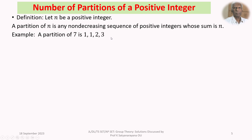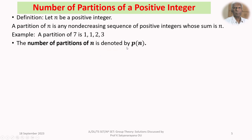Now the question is, how many partitions are there for a given N? The number of partitions is denoted by P(N). So P(7) means how many partitions are there for 7? Let us study P(N) for small values of N.